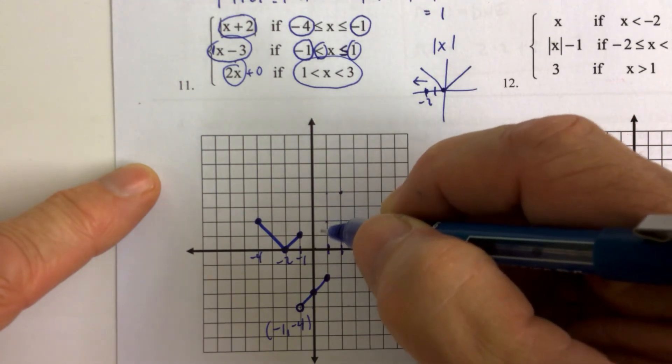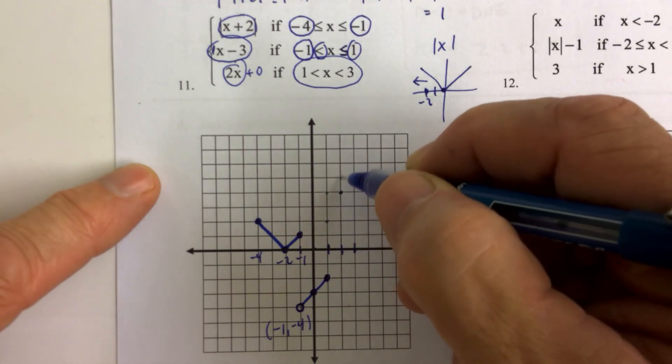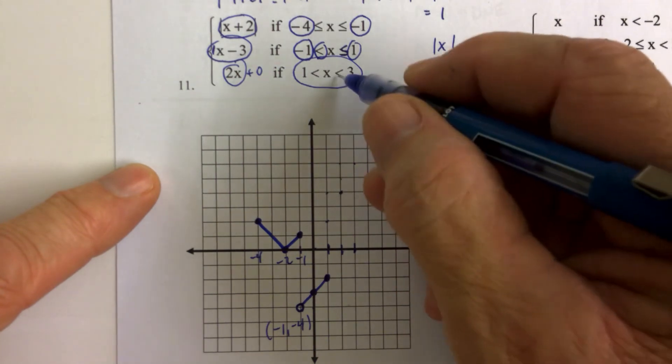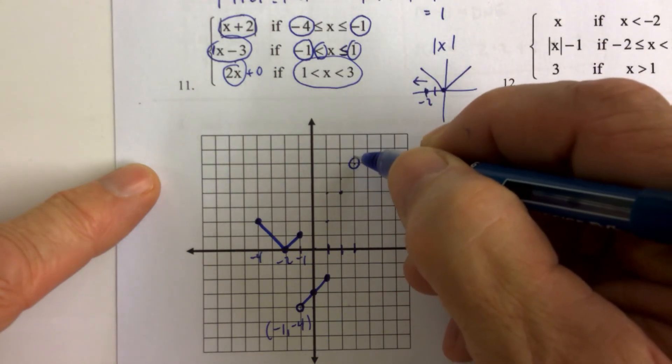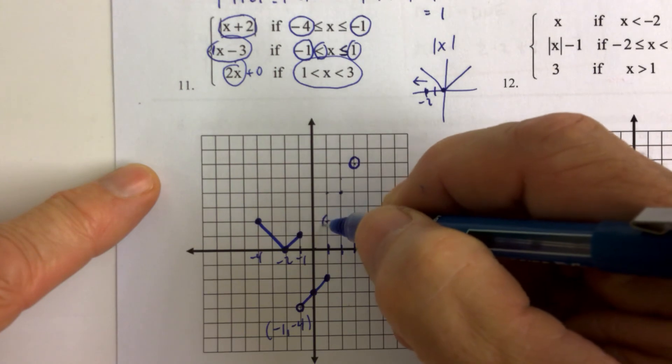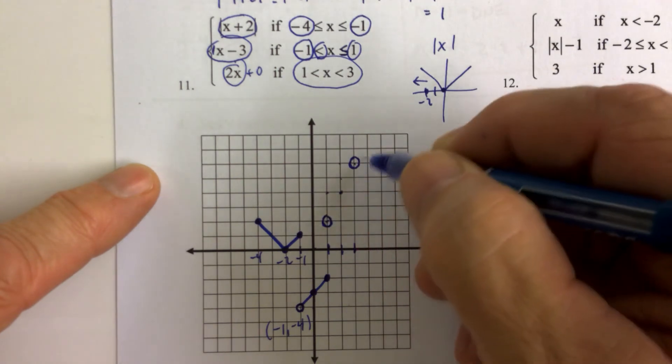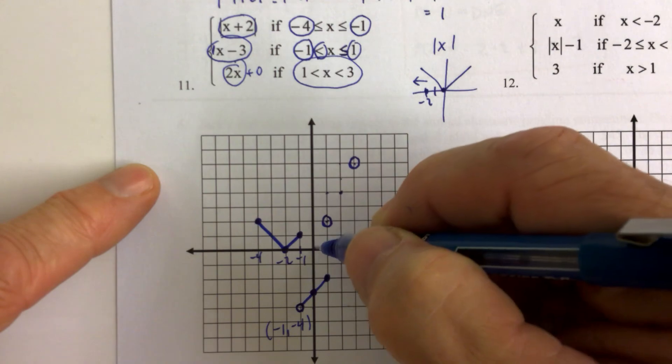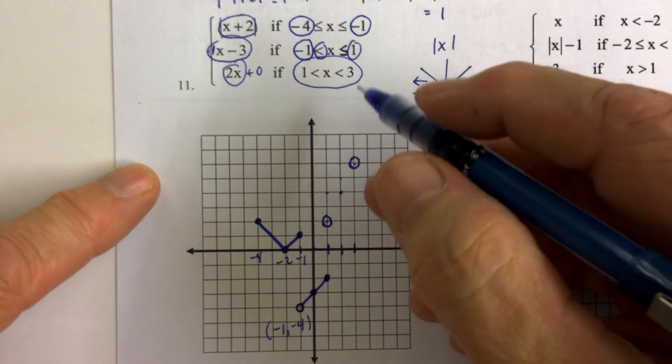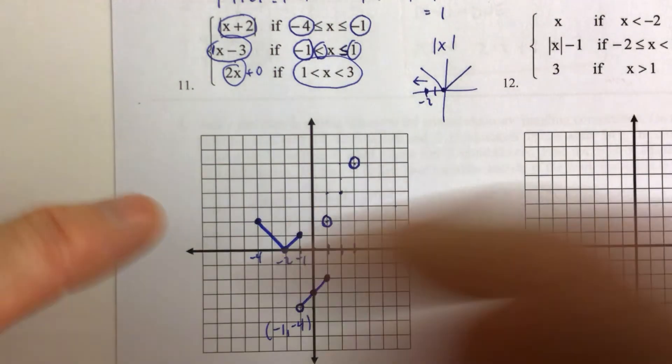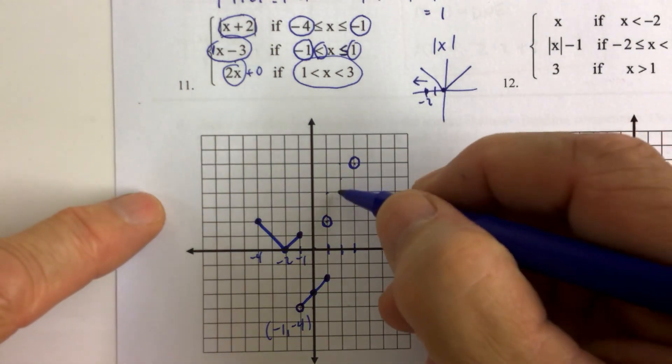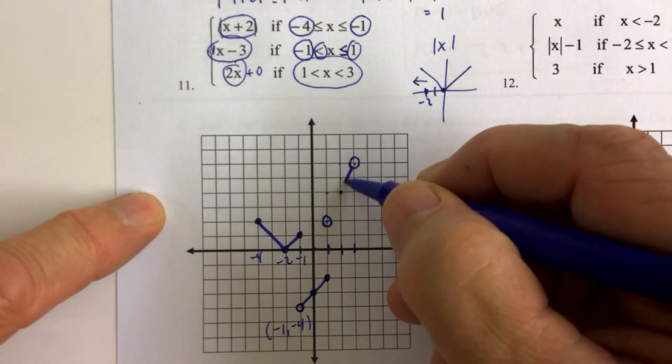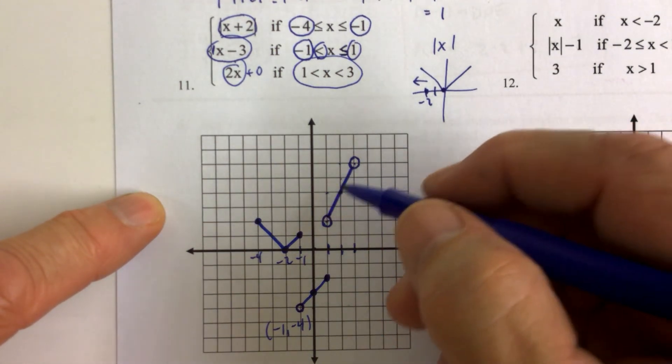Now, if you keep going, if you follow the pattern of going up 2 and over 1, up 2 and over 1, there would be an open circle at the end point there, an open circle at that end point. If the line continued without regard for the domain, it would go right through the origin. And you would connect those open circles and connect that dot there in the middle. So that's that piece of the piecewise function.